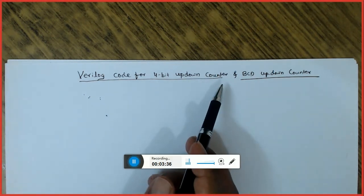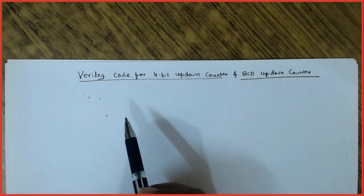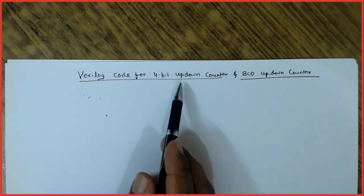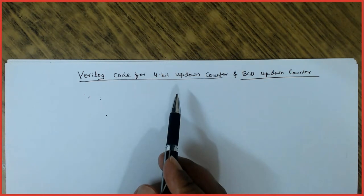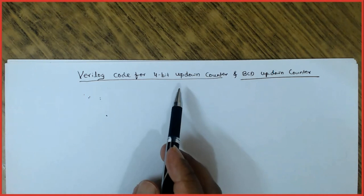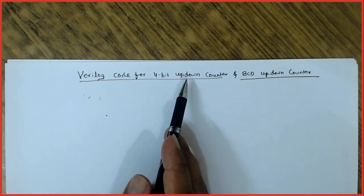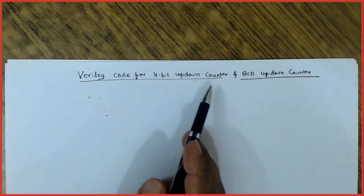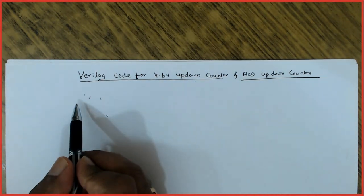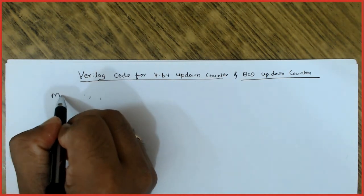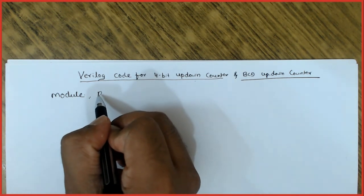Now we look into the Verilog code for the 4-bit up-down counter and BCD up-down counter. Designing an up counter or down counter alone is simpler compared to designing both. The up-down counter can be designed in two ways — with an additional input to command count up or count down, or to automatically count up to the maximum and then automatically count down. For the automatic approach, the code starts with the module declaration. Let me name it 'up_down_counter'.